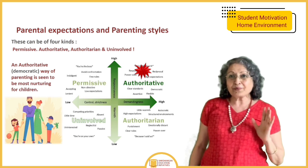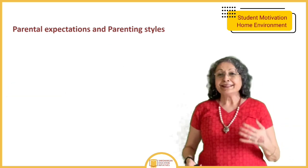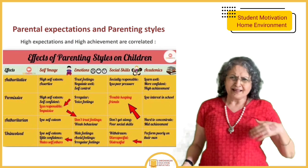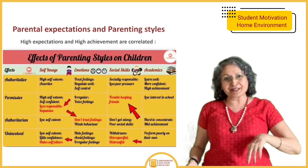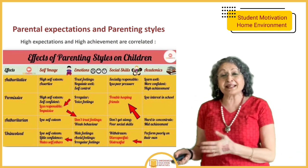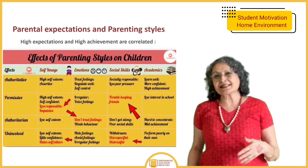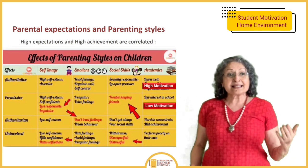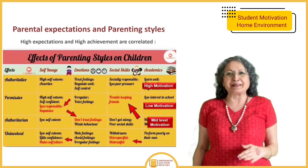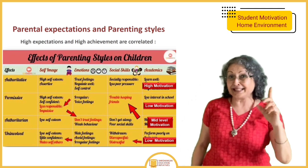A second slide explains the same point: high expectations and high achievement are correlated. Authoritative parenting results in higher motivation in students. Permissive parenting results in very low motivation. Authoritarian parenting gives mid-level motivation — many of us probably grew up this way. Uninvolved parenting again leads to low motivation. Therefore, we need to aim for the authoritative style.